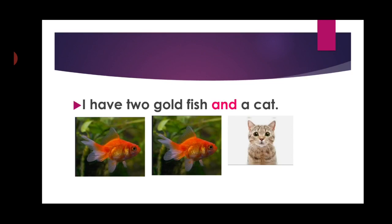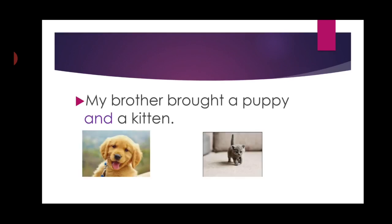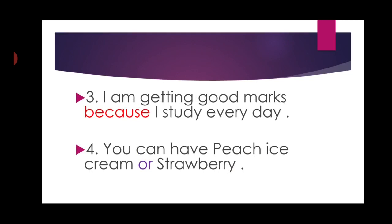The second example: 'My brother brought a puppy.' and 'My brother brought a kitten.' By adding a conjunction word, we can join two sentences very easily. Third example: 'I am getting good marks because I study every day.' Here the word 'because' is added to make a single sentence, and 'because' is a conjunction word.